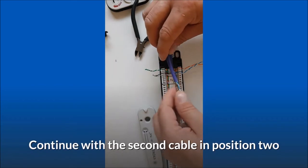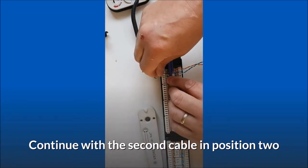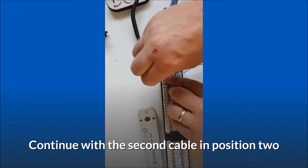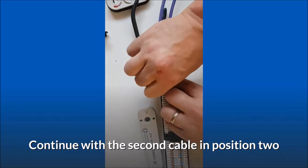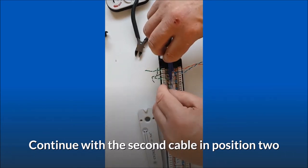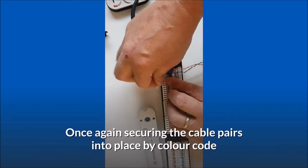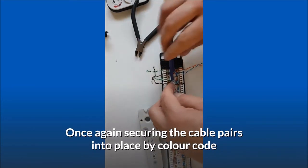Continue with the second cable in position 2. Once again, secure the cable pairs into place by color code.